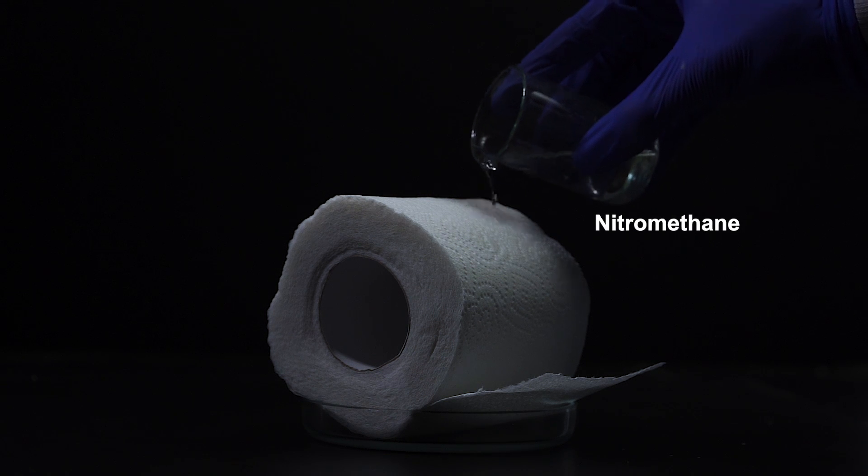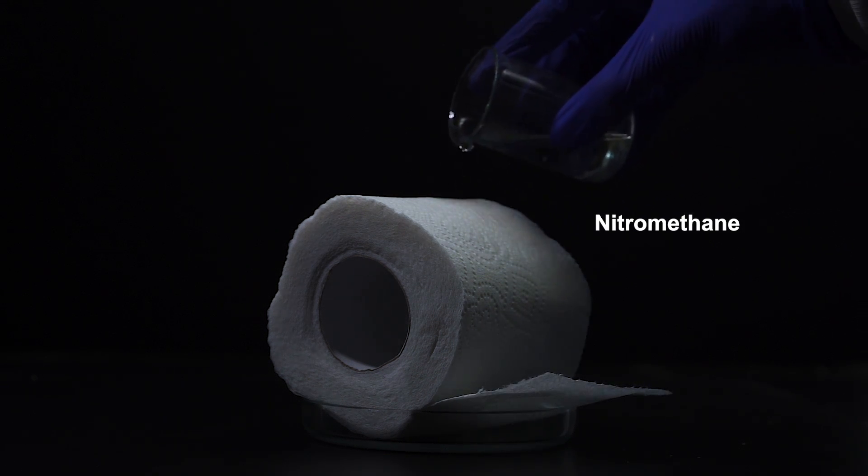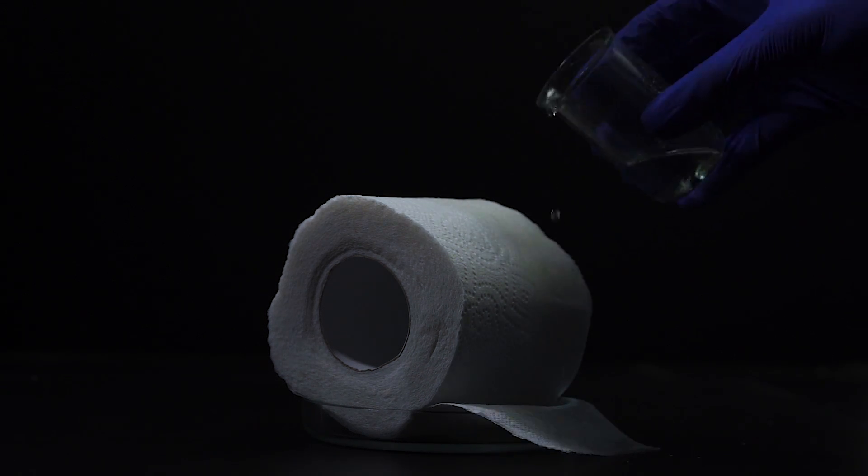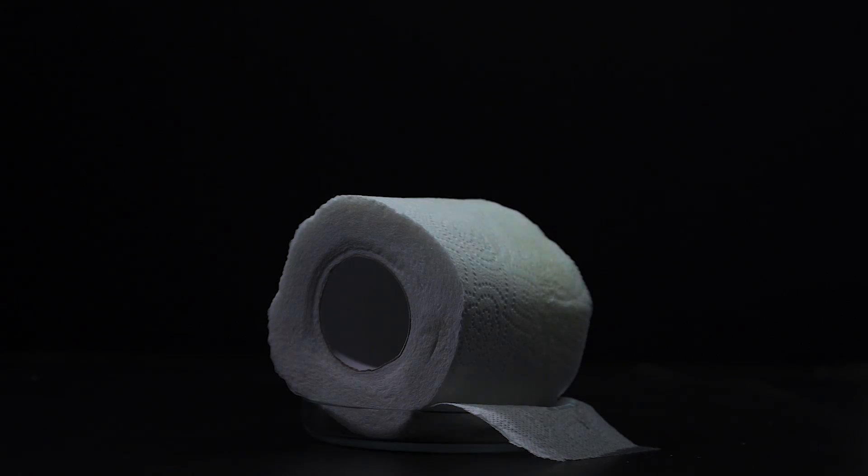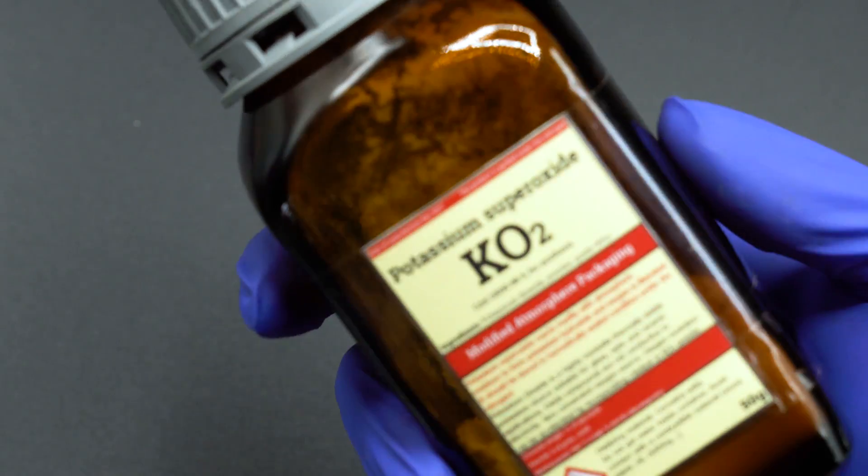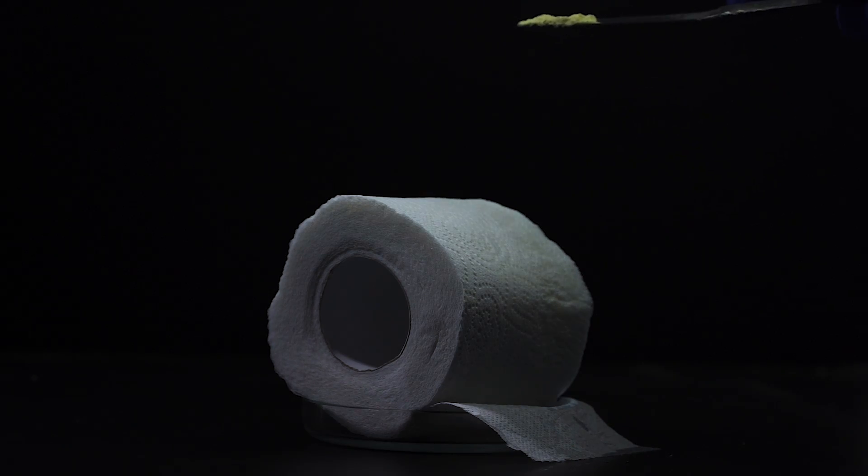Take a roll of toilet paper and soak it in nitromethane. Then take a little bit of potassium superoxide and powder it on top.